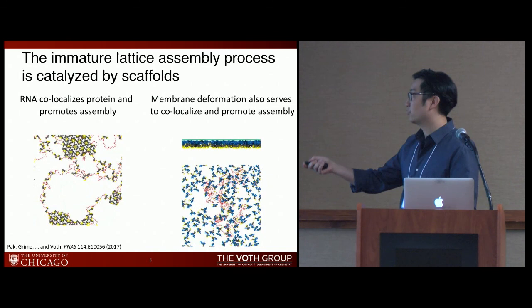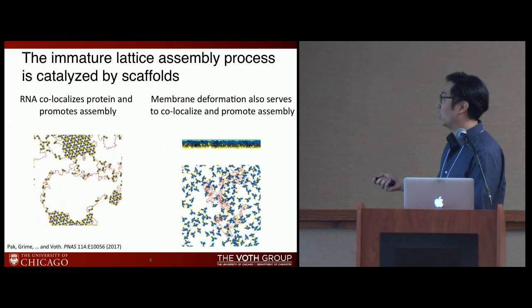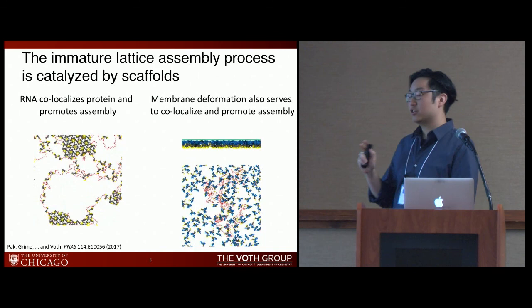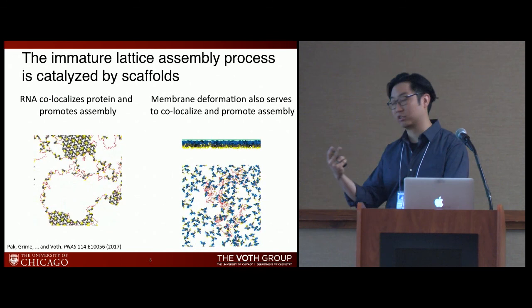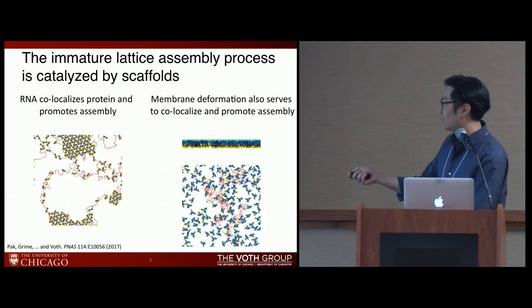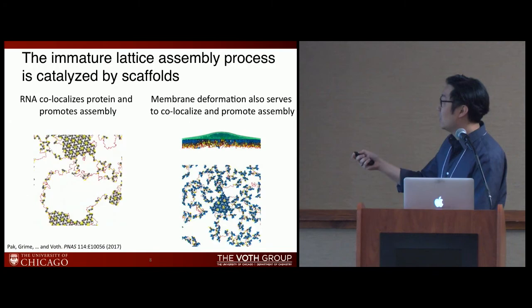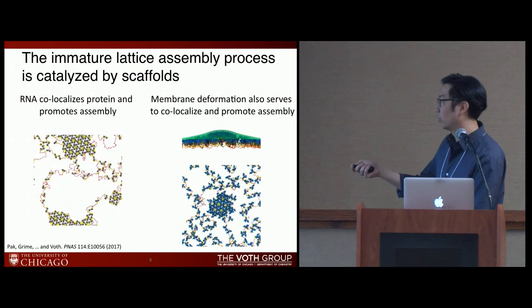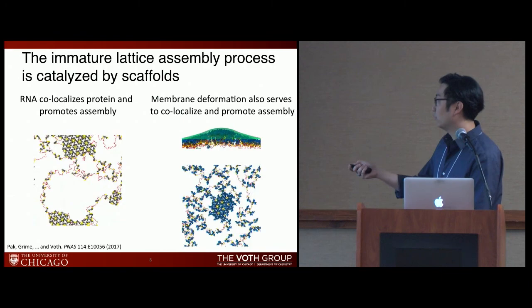When we introduce an additional domain — the blue domain on top of the gray protein — it imparts extra curvature through strain into the proteins when they oligomerize. Now membrane deformation plays an important role in regulating assembly. This second movie is the same system but with the extra blue domain, shown from the side. As the membrane deforms, it co-localizes the assembly of proteins. Assembly is much slower due to additional entropic barriers, but it allows a very well-formed and well-ordered lattice to develop.